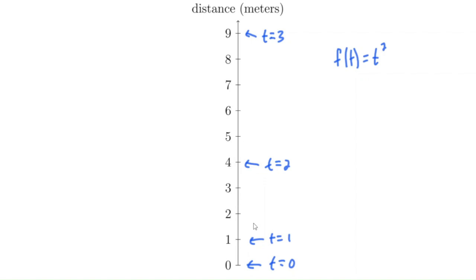Now, if we wanted to find the average velocity of the car between, let's say, t equals one and t equals three seconds, we'd have to figure out how far the car traveled. It traveled eight meters in that two second interval. So between t equals one and t equals three, it traveled eight meters in two seconds, and eight divided by two is four. So it traveled four meters per second on average — that was the average velocity between t equals one and t equals three seconds.